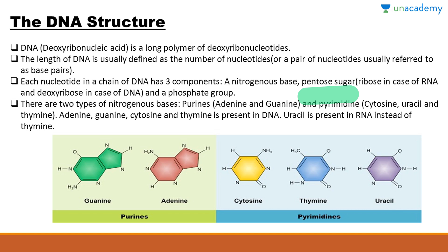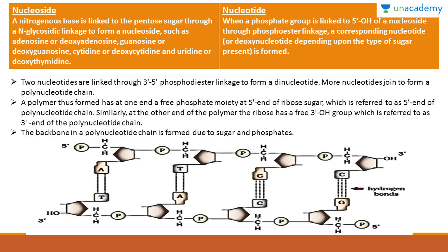There are two types of nitrogenous bases: purines and pyrimidines. Purines are adenine and guanine; pyrimidines are cytosine, uracil, and thymine. Adenine, guanine, cytosine, and thymine are present in DNA, whereas uracil is present in RNA instead of thymine.